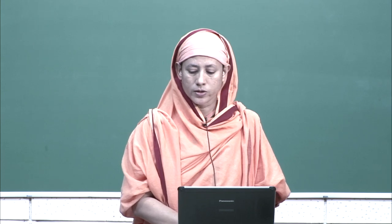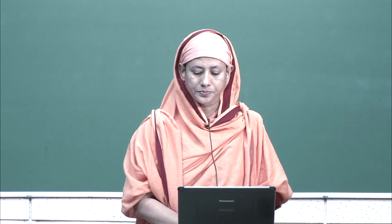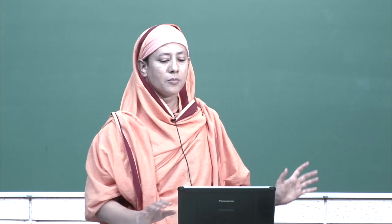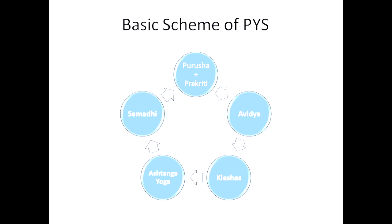The basic scheme of yoga — let me show it to you on this slide here. See the basic scheme of yoga: Purusha and Prakriti, when they come together, the first thing they generate is avidya — avidya ka matlab hai, you are not able to capture the real I. That is supposed to be the root of all suffering — ignorance, ignorance of who I truly am.